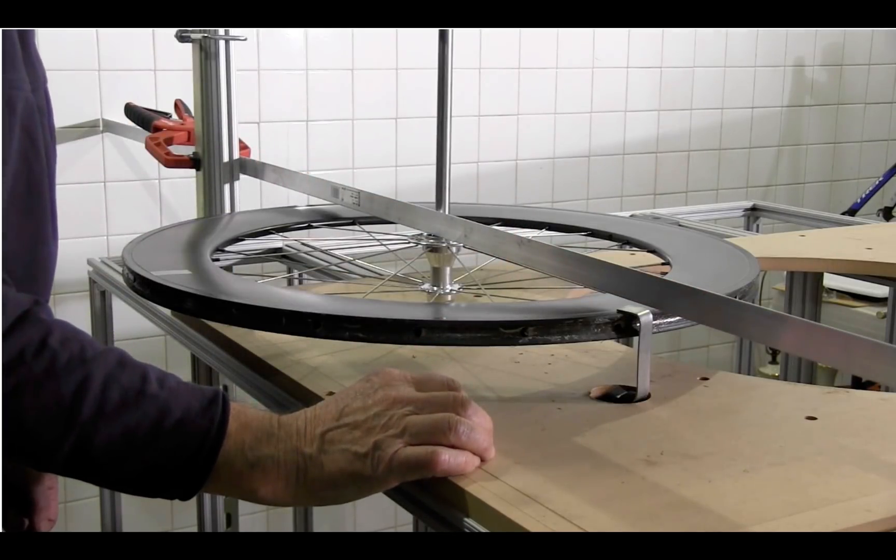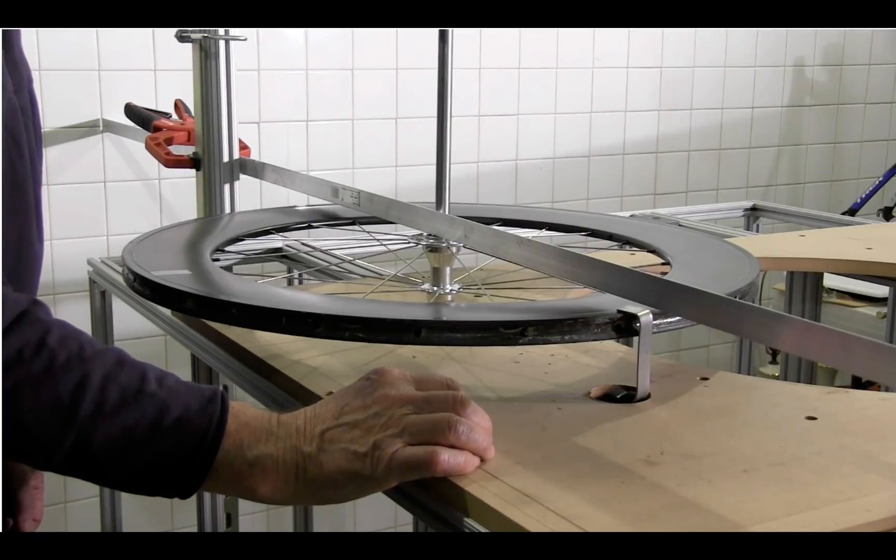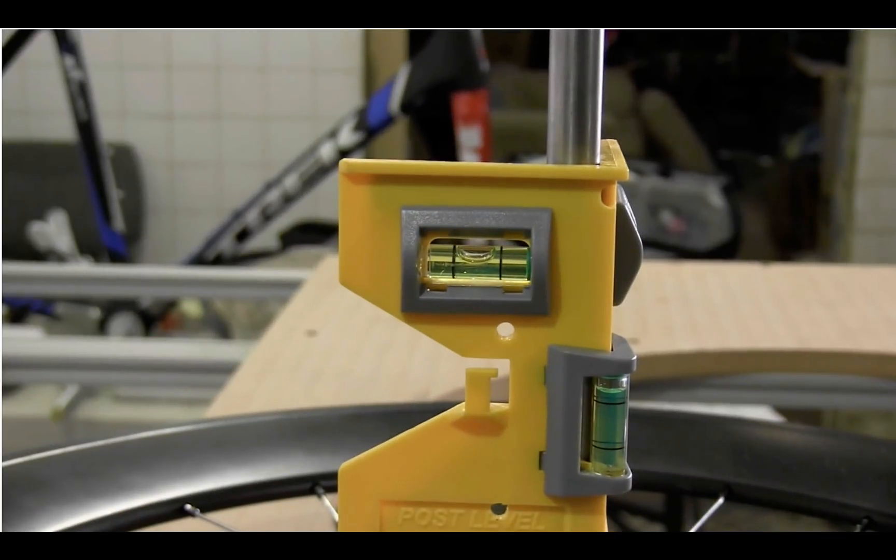We can see here that my bubble is exactly in the middle of this level so that I know that my rod is perfectly perpendicular and my rim is perfectly horizontal to start with.